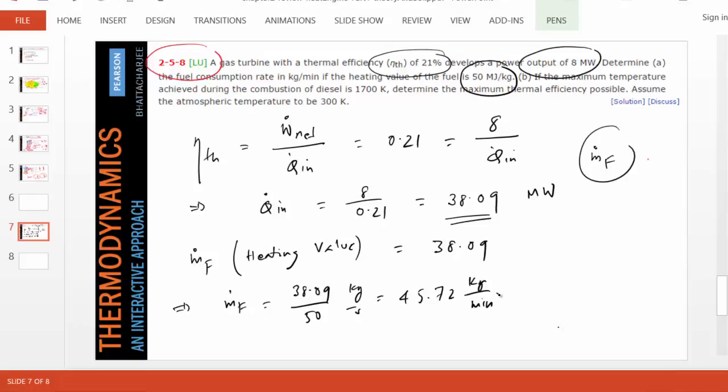Finally, determine the maximum thermal efficiency possible. That's the beauty of the Carnot efficiency, because we know the Carnot cycle will have the most possible efficiency when using the maximum temperature and minimum temperature of the cycle, which are given here: 1700 and 300. The thermal efficiency of the Carnot cycle is 1 - T_C/T_H = 1 - 300/1700, which gives us an efficiency of 82.35%.